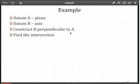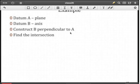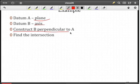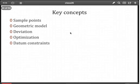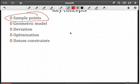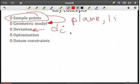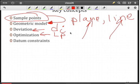So here's an example. We've got datum A being the plane that we just looked at and datum B being the axis. And then we're going to construct B perpendicular to A and find the intersection. So you start with your set of sample points. From those sample points, we constructed, based upon a geometric model, the deviation that was the D sub i from that geometric model. So that was it. We had a plane, a line, whatever the geometric model is. And then we used our LP norm to determine the parameters for the plane, the parameters for the line, based upon minimizing the sum of square deviations when P is equal to 2.